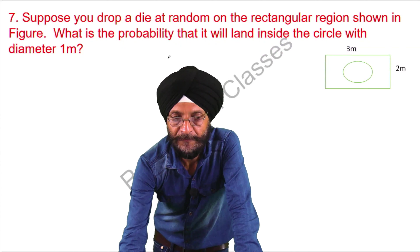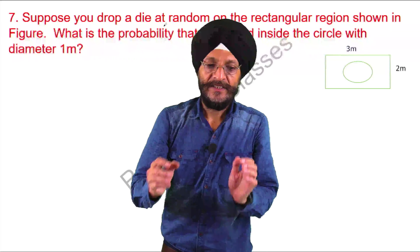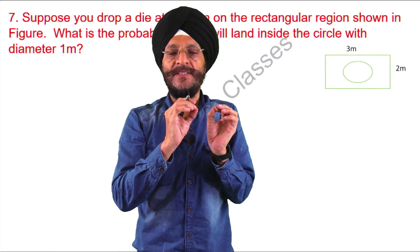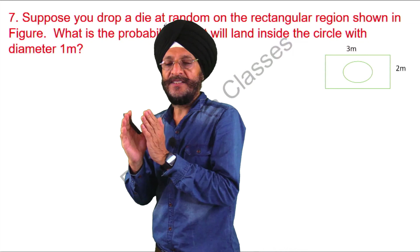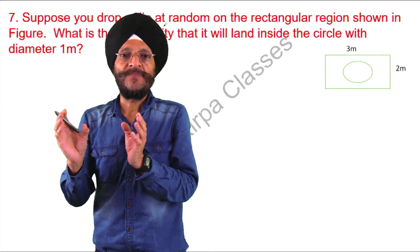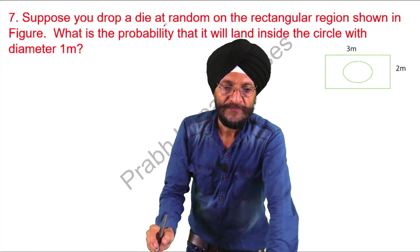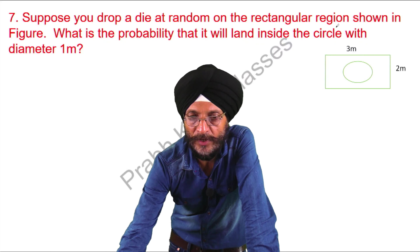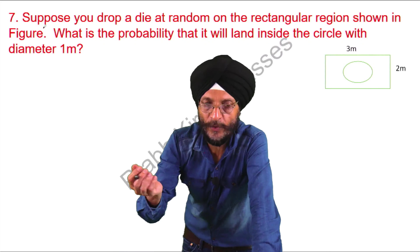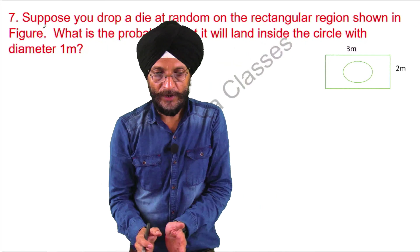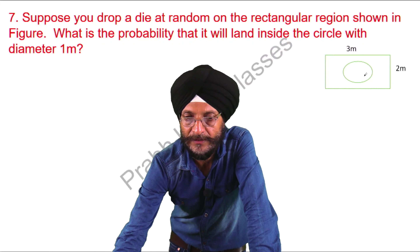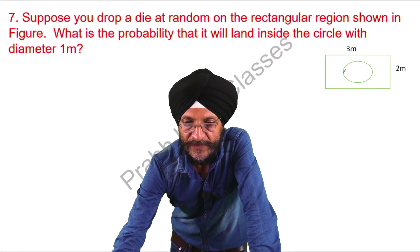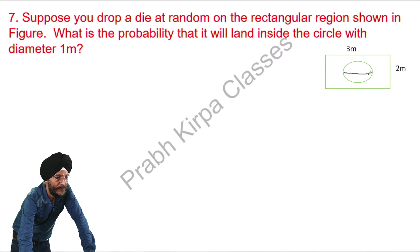Next question: suppose you drop a die at random on the rectangular region shown in the figure. Die and dice refer to the same object — die is singular whereas dice is plural. You drop the die on the rectangular figure. What is the probability that it will land inside the circle, with a diameter of 1 metre? From here to here is the diameter, which is 1 metre.